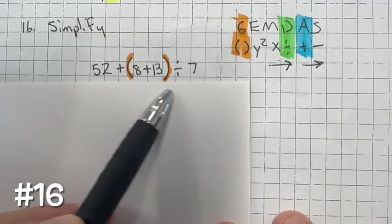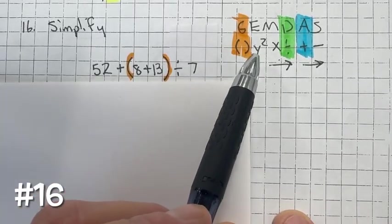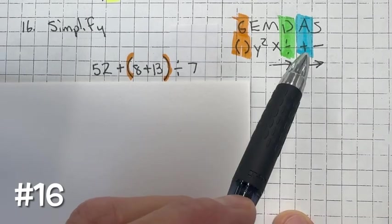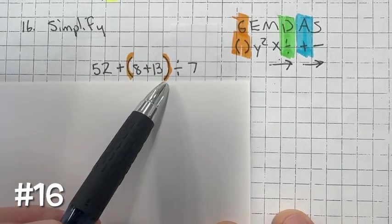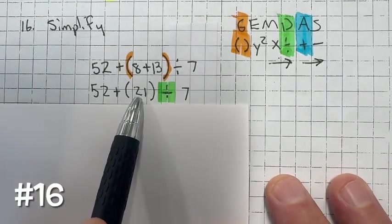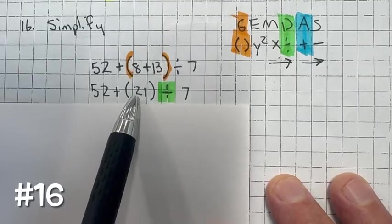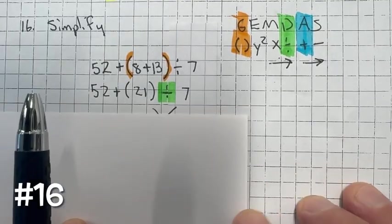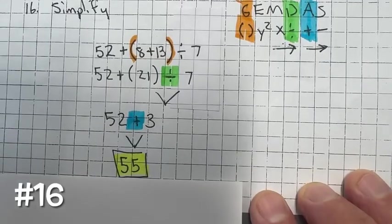Number 16: simplify this expression following the order of operations — GEMDAS: grouping symbols, then exponents, multiplication and division left to right, then addition and subtraction left to right. We have grouping symbols, so simplify 8 plus 13 which equals 21. Next is division: 21 divided by 7 equals 3. Finally, 52 plus 3 equals 55.